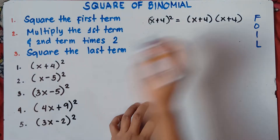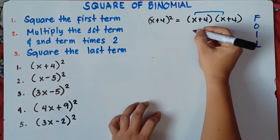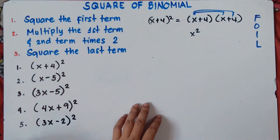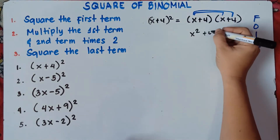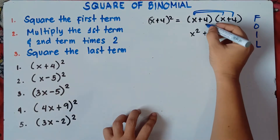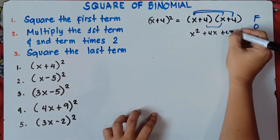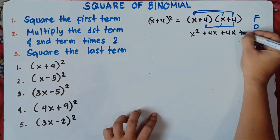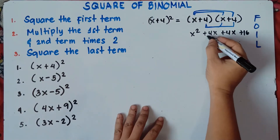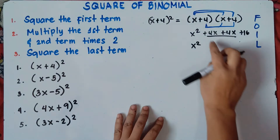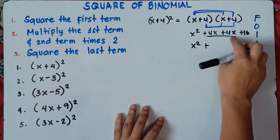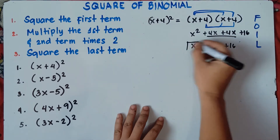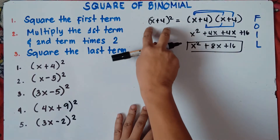First: x times x, that would be x squared. Outer: x times positive 4, that's positive 4x. Inner: positive 4 times x, that's positive 4x. Last: positive 4 times positive 4, that's positive 16. Combining like terms: copy x squared, then 4x plus 4x — 4 plus 4 is 8 — so 8x, then plus 16. So the answer using the FOIL method is x squared plus 8x plus 16.